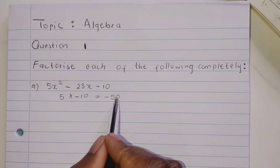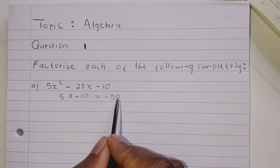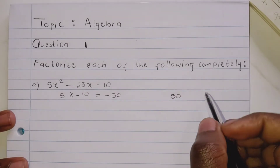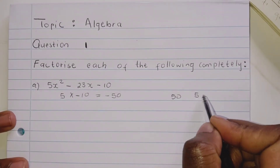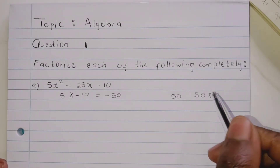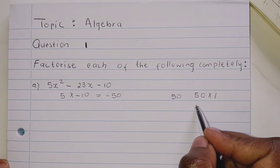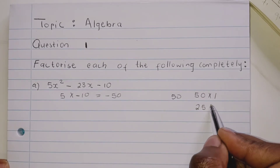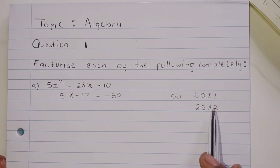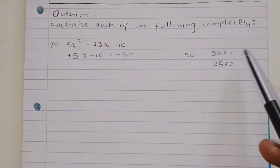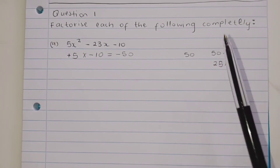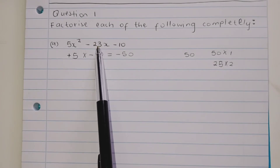So because we have 50, we're gonna write the factor pairs to the side. The product of 50: 50 times 1 equals 50, then 25 multiplied by 2 equals 50. Now we know our middle value is 23.